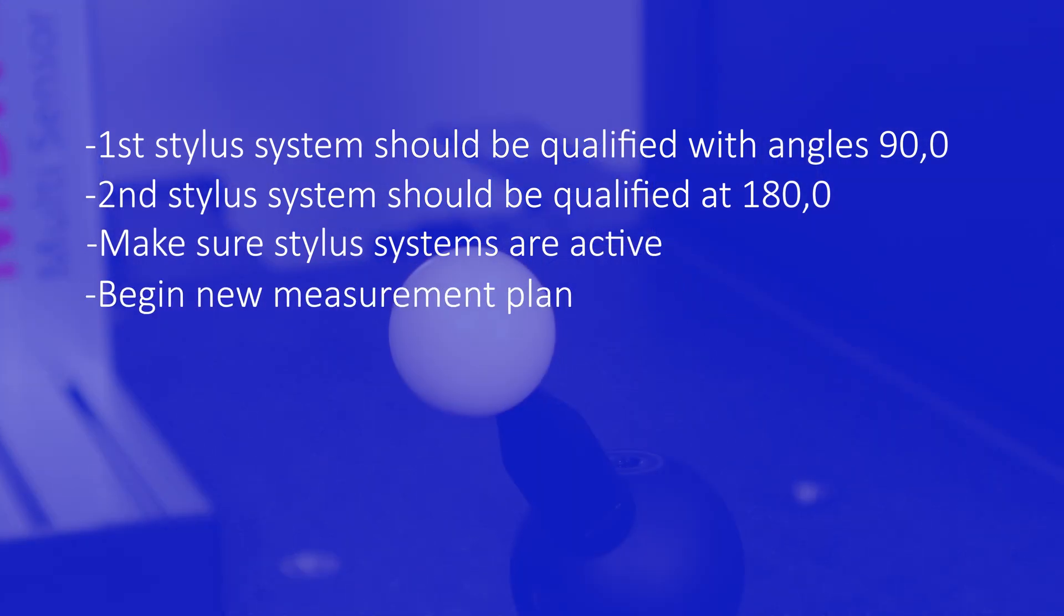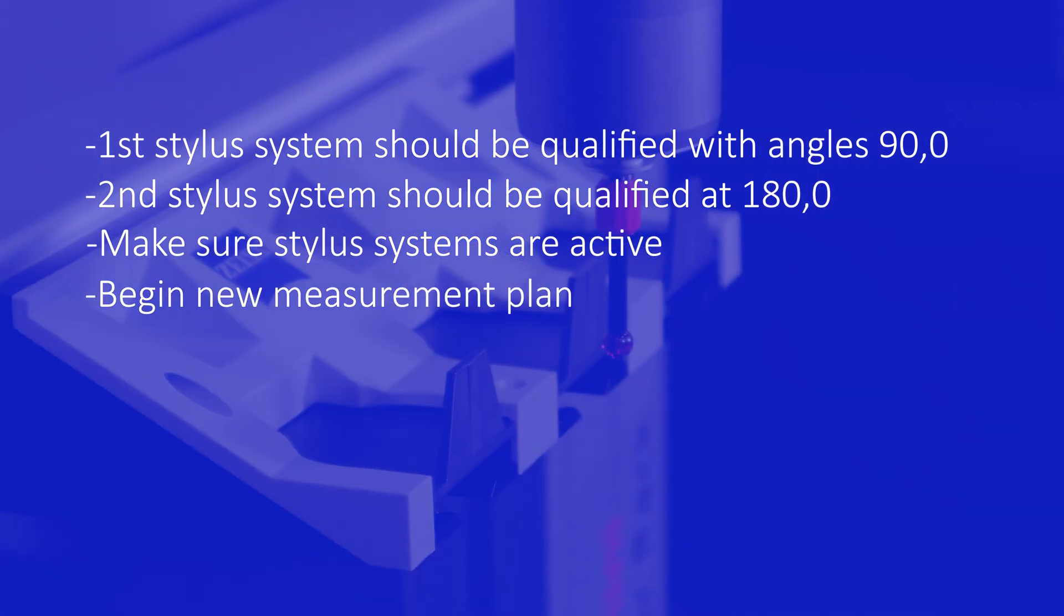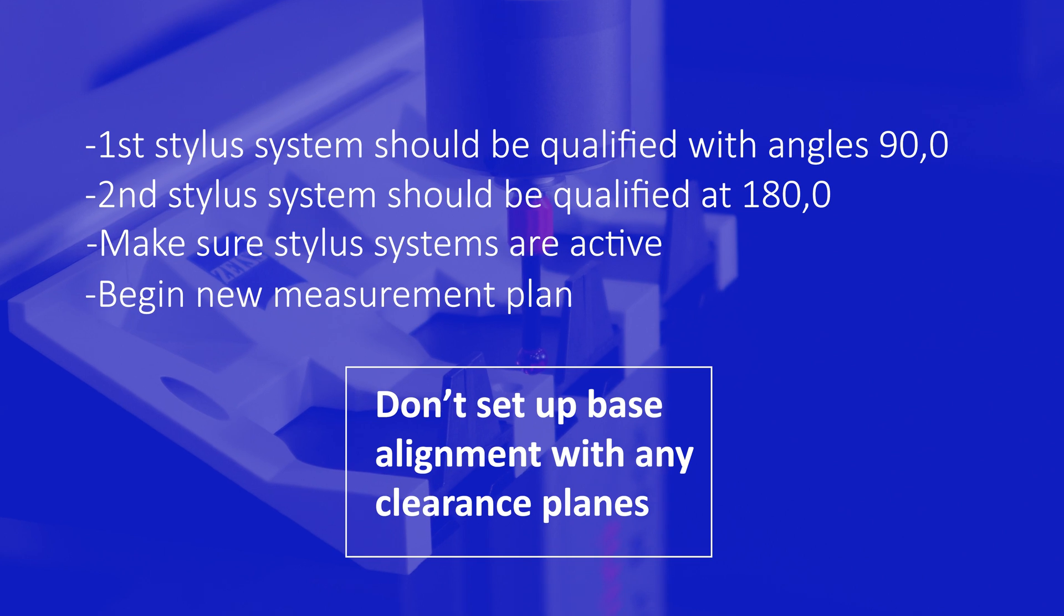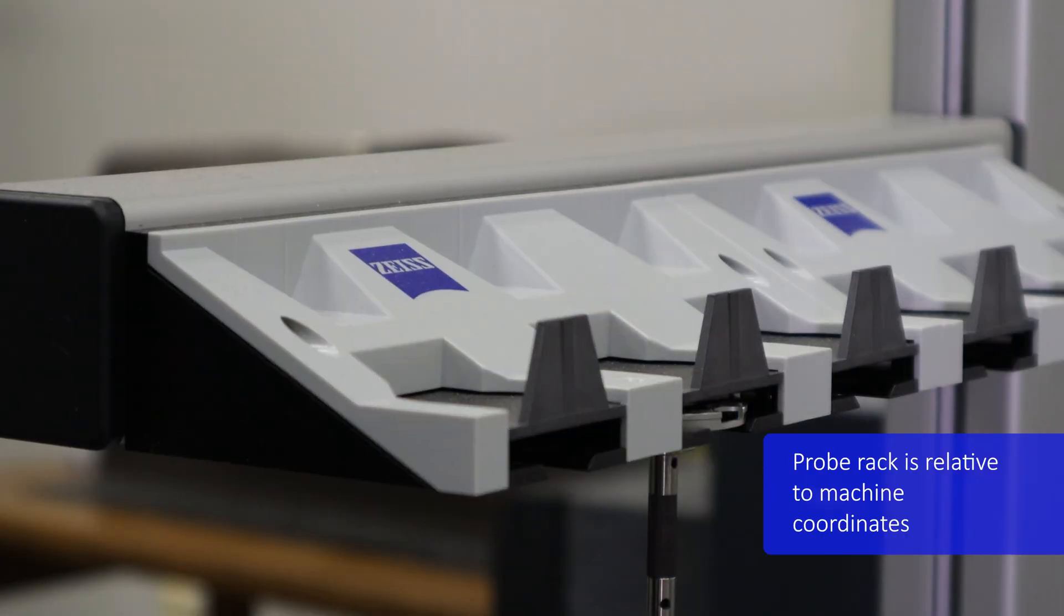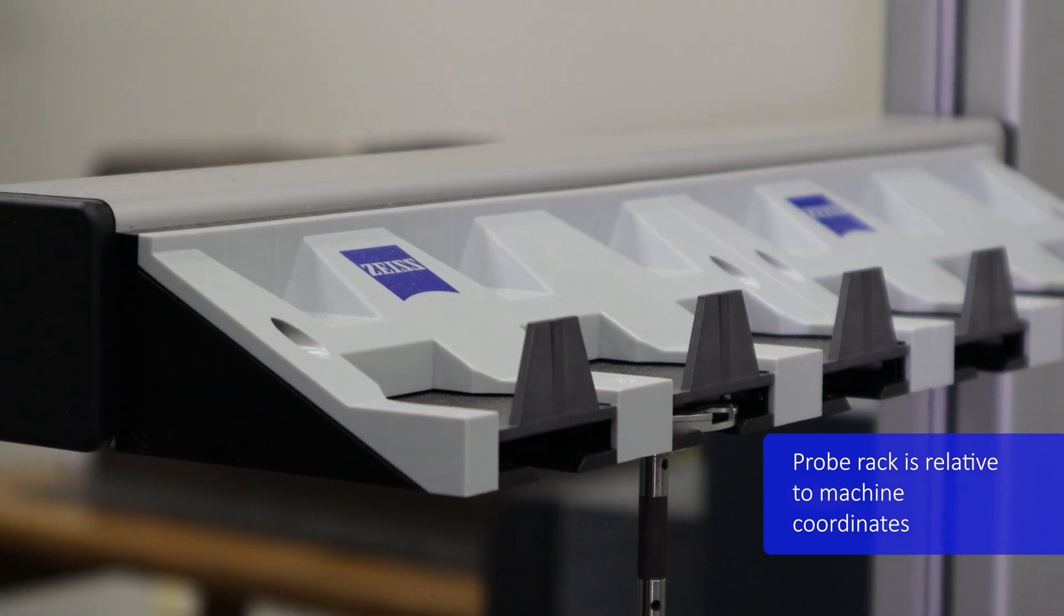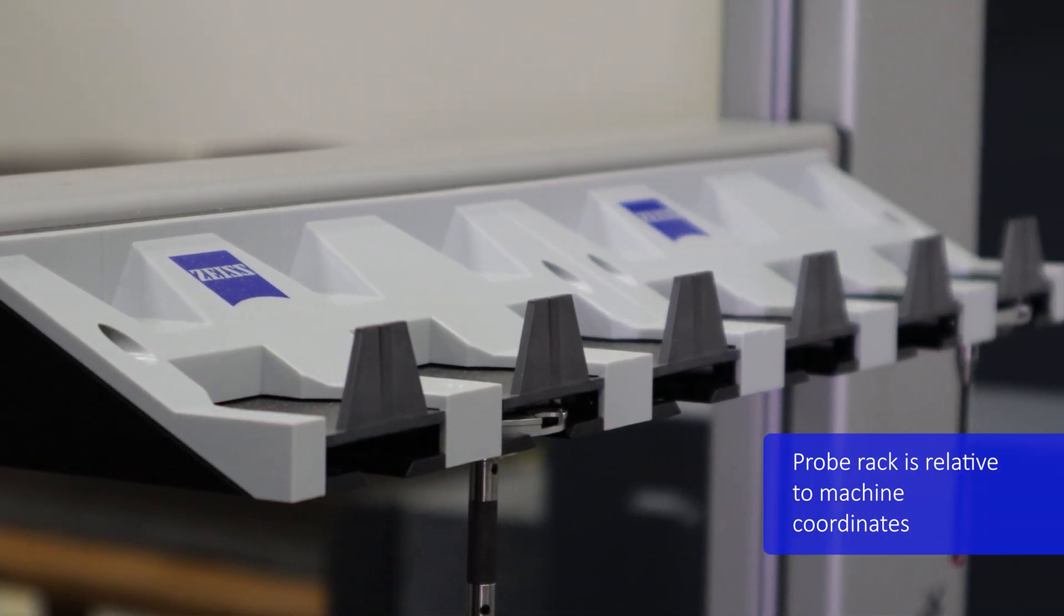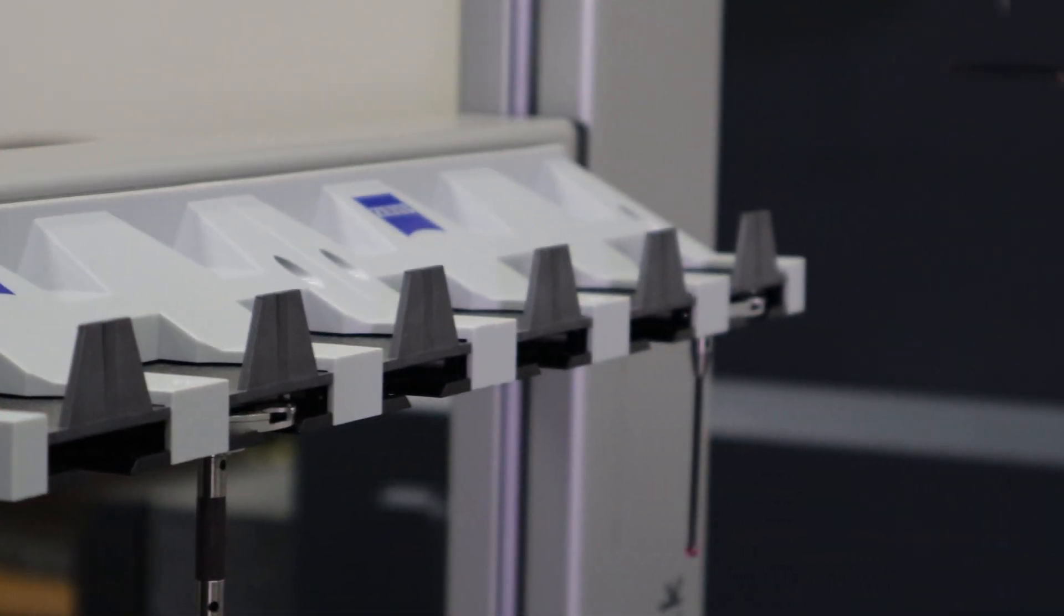Then begin a new measurement plan, sometimes called a program. Don't set up a base alignment or any clearance planes. The reason is your probe rack is going to be relative to machine coordinates, so you cannot set up a base alignment or clearance planes when you start your new measurement plan.